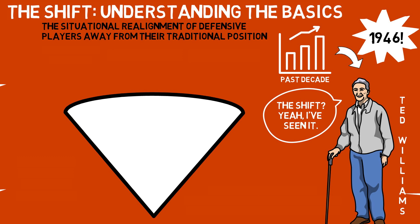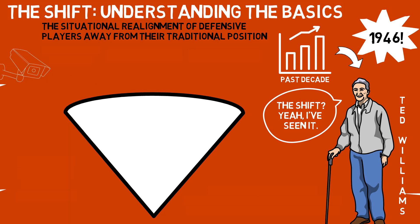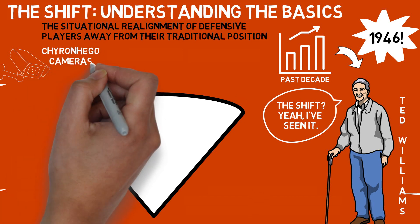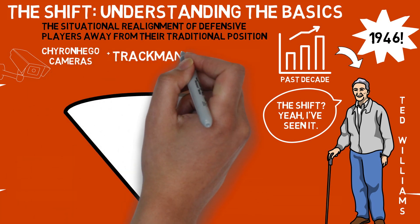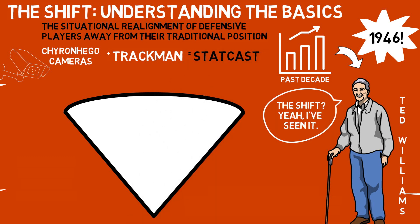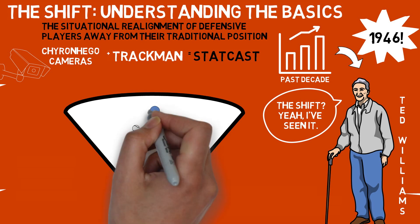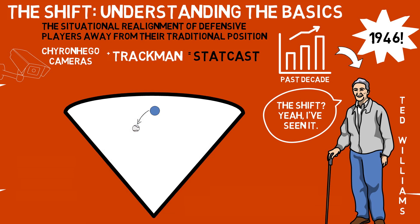Why is it increasing in popularity now? To understand this, we need to understand the technology available to teams today. We're talking about StatCast — the combination of Chiron Hago movement tracking cameras and the TrackMan ball flight tracking radar system. This allows us not only to know the exact position of where every single ball hit on an MLB field lands, but also where the player was that caught it, how far they traveled, and where they were originally set up.